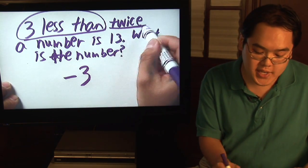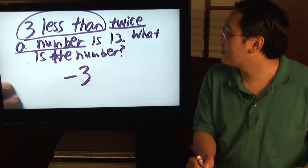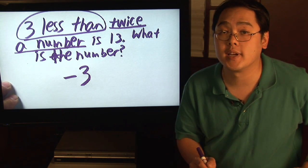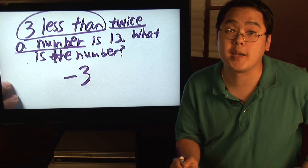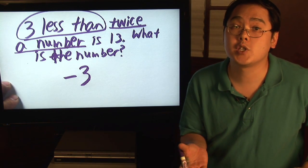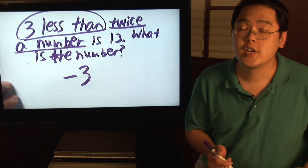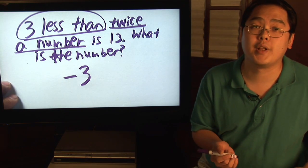Now, twice a number. When you do something twice, you're doing something two times. That's what it means, two times. Well, two times means multiplication. So that's what twice a number actually means—a number multiplied by two.